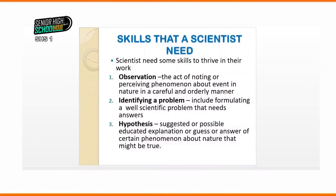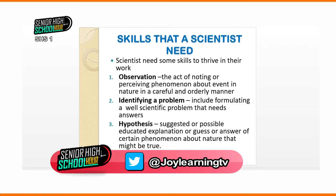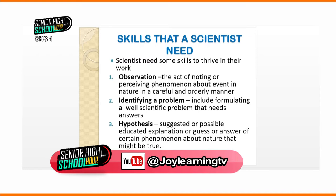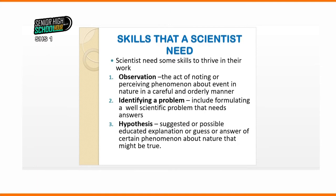So let's begin. There are a lot of skills that we need. The first on the list is observation. Every scientist is very observant. This observation is not about just looking at something that occurs. This is an observation with a critical mind, a critical eye, a critical sense. We mostly say observation is the act of noting or perceiving a phenomenon or an event that occurs in nature carefully and in an orderly manner.